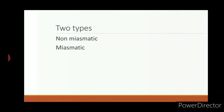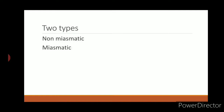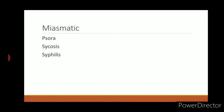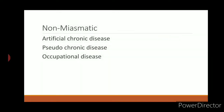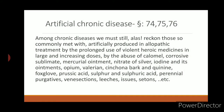So let us start with today's topic: types of chronic diseases. According to master Hahnemann, there are two basic types: first, non-miasmatic, and second, miasmatic. Under miasmatic we have three types — psora, sycosis, and syphilis. In non-miasmatic chronic diseases we have artificial chronic disease, pseudo chronic disease, and occupational diseases, where there is no miasmatic activity in the background.